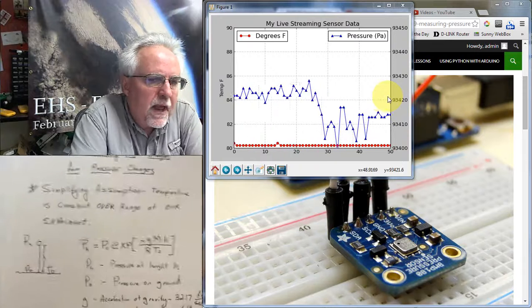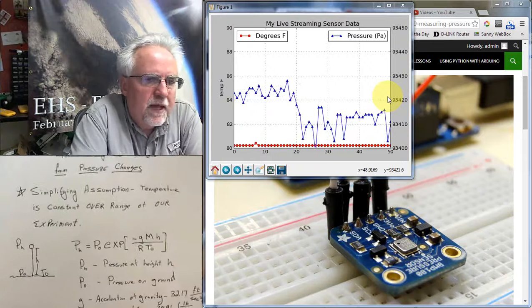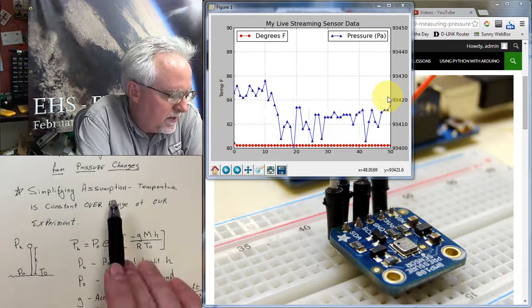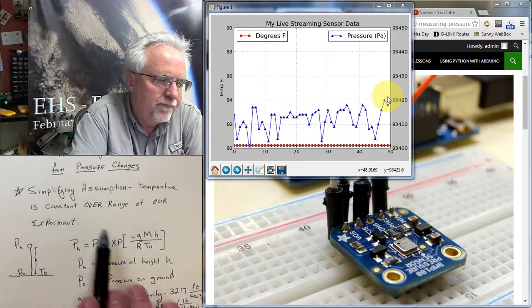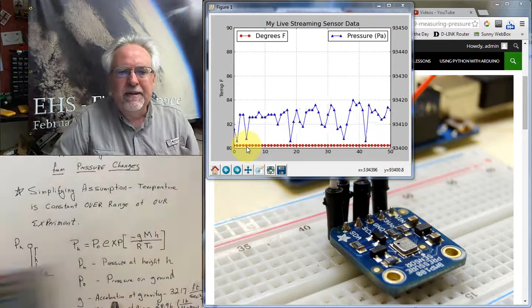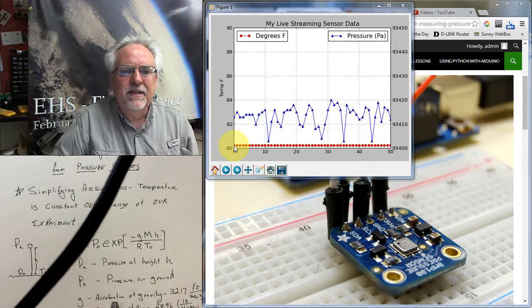And so then this is the way that the math is going to go. That we're going to have to make a simplifying assumption. And the simplifying assumption that we're going to make is that the temperature is constant over our range of the experiment. Well, it's pretty constant. Let's look here. I'm looking at, like, I can easily see this is 80, 81.